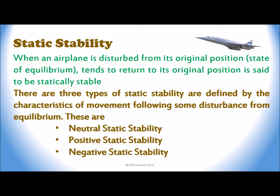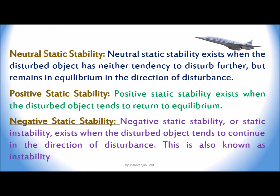Static stability: when an airplane is disturbed from its original position or state of equilibrium and tends to return to its original position, it is said to be statically stable. There are three types of static stability defined by the characteristics of movement following some disturbance from equilibrium: neutral static stability, positive static stability, and negative static stability. Neutral static stability exists when the disturbed object has neither tendency to return nor diverge, but remains in equilibrium in the direction of disturbance. Positive static stability exists when the disturbed object tends to return to its original position. Negative static stability is also known as instability.